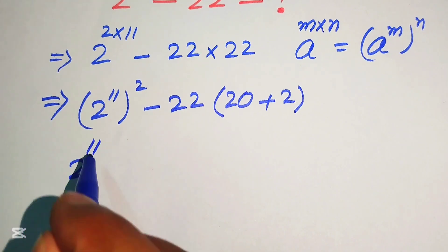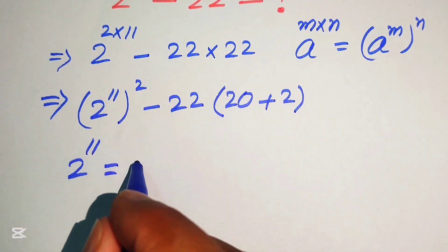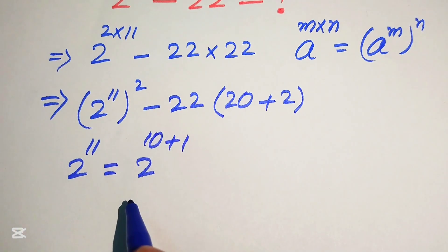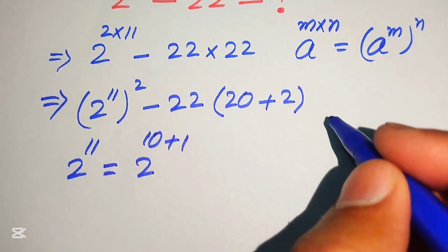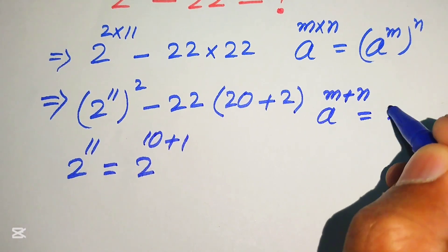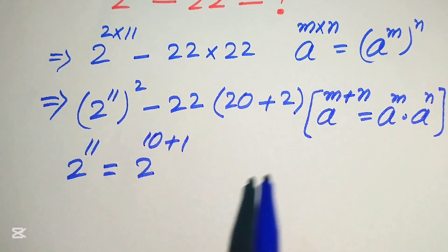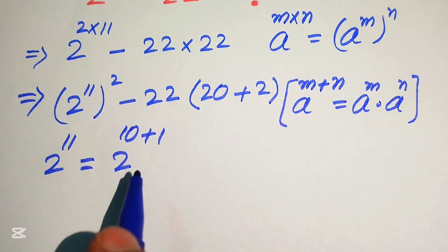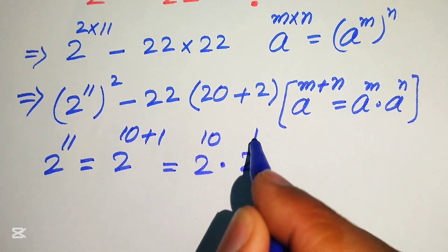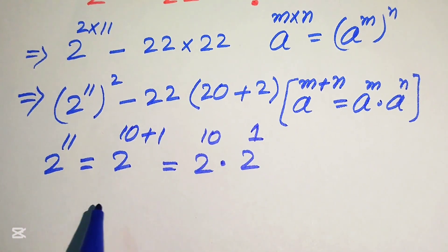Now we find the value of 2 to the power of 11. We write 11 as 10 plus 1 and apply the exponent law: a to the power of m+n equals a to the power of m multiplied by a to the power of n. So we break the exponent and write it as 2 to the power of 10 multiplied by 2 to the power of 1.